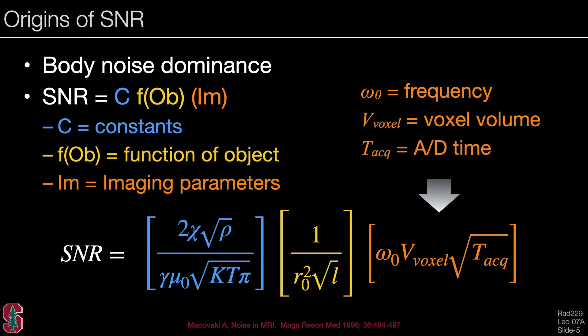Let's look at the origins of signal-to-noise ratio. We generally assume we have body noise dominance, meaning we've done the best we can with our hardware and are now limited by the subject that we are imaging. This is a formulation for signal-to-noise ratio that is a function of constants, the object, and the imaging parameters. The key part we're going to focus on for this course are the imaging parameters. At the rightmost part of this equation, the signal-to-noise ratio is proportional to the baseline resonance frequency, the voxel volume, and the square root of the acquisition time.